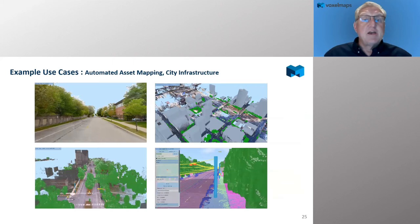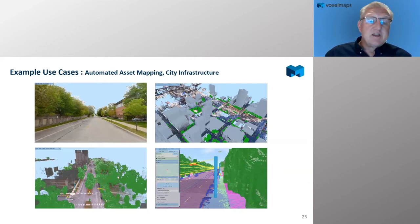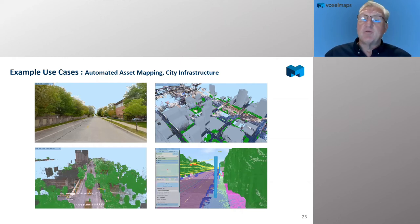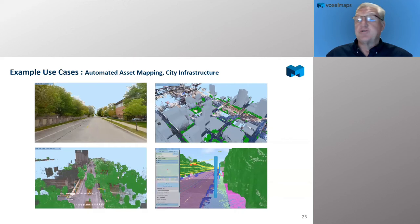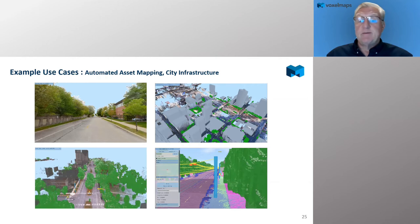There are lots of example use cases across automated asset mapping in city infrastructure. We're data-source agnostic — we drove data and merged it with existing 3D models taken via LiDAR. Infrastructure use cases include looking at pavements, the right-of-way, cities looking at the health and type of trees within their right-of-way, the volume of those trees, and potential vegetation management issues.